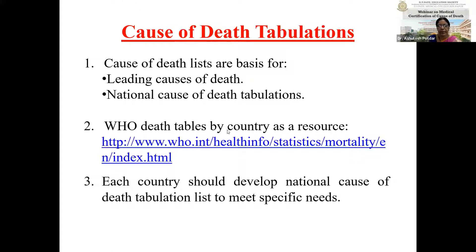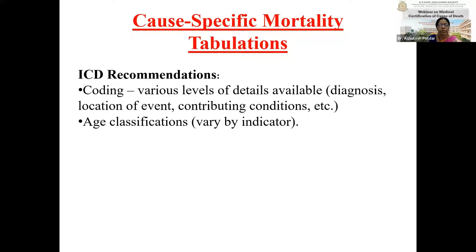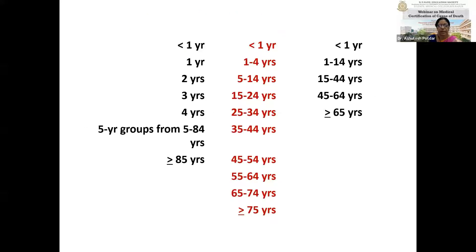WHO death tables by country are available as a resource. Each country should develop a national cause-of-death tabulation list to meet specific needs. ICD recommendations include coding various levels of details available such as diagnosis, location of event, contributing conditions, etc., and age classification varies by indicator.